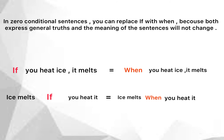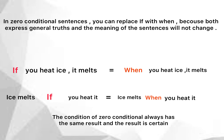Now I will tell you three important notes. First, in zero conditional sentences you can replace 'if' with 'when' because both express general truths and the meaning of the sentence will not change. For example: 'if you heat ice, it melts' has the same meaning as 'when you heat ice, it melts.' Also: 'ice melts if you heat it' means the same as 'ice melts when you heat it.' The condition of zero conditional always has the same result and that result is certain.